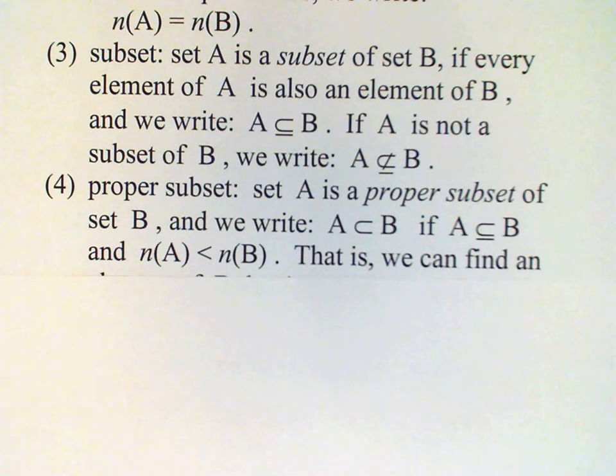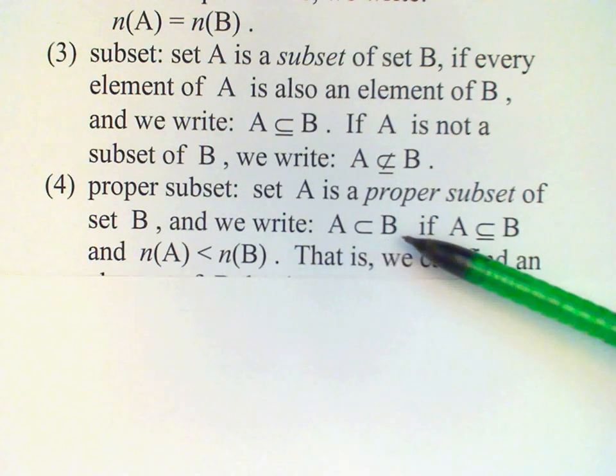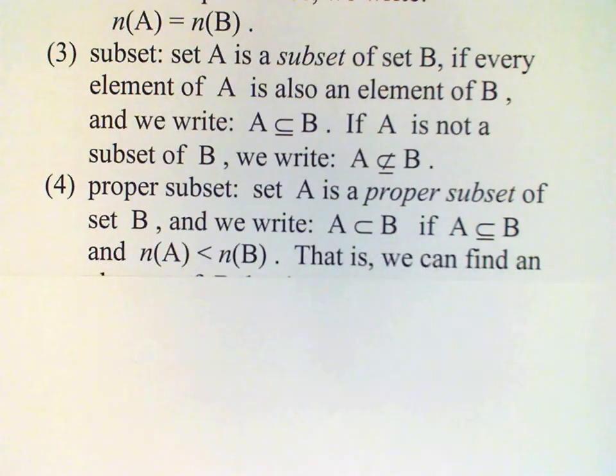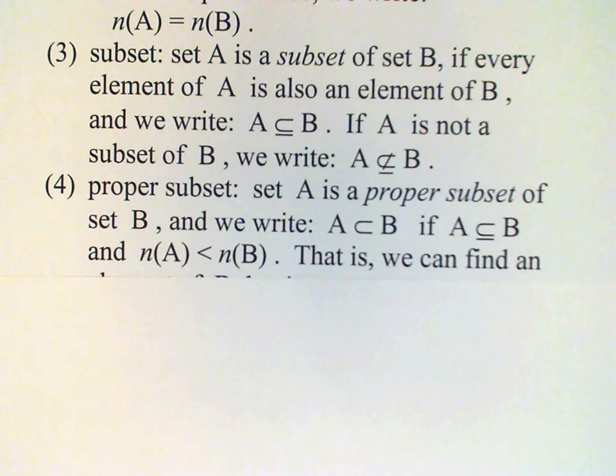So A is a subset of B but A is not equal to B, then we write A as a proper subset of B using the symbol without the line. Another way to think about that is that the cardinal number of A must be less than the cardinal number of B.